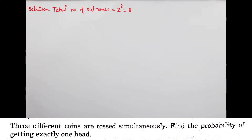Question है बच्चों: three different coins are tossed simultaneously. Find the probability of getting exactly one head. इस question में कहा गया है कि three different coins को एक साथ toss किया जाता है, तो exactly one head आने की probability आपको बतानी है.